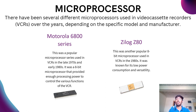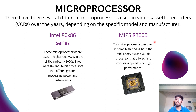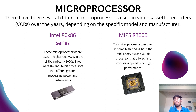The second is the Zilog Z8, another popular 8-bit microprocessor used in VCRs in the 1980s, known for its low power consumption and versatility. Another one is the Intel 8086 series, used in higher-end VCRs in the 1990s and early 2000s — 16 and 32-bit processors that offered greater processing power and performance. The last one is the MIPS R3000, used in some high-end VCRs in the mid-1990s. It was a 32-bit processor that offered fast processing speeds and high performance.